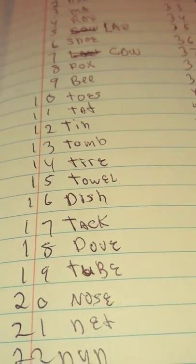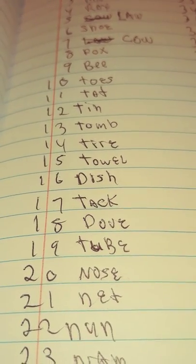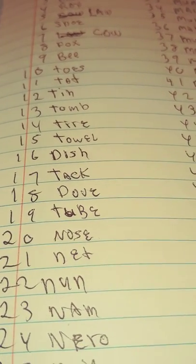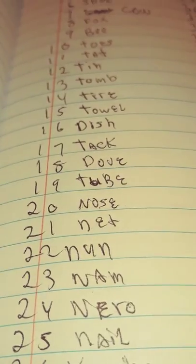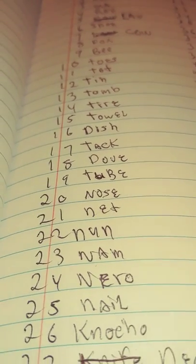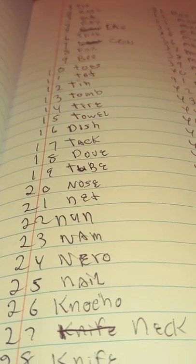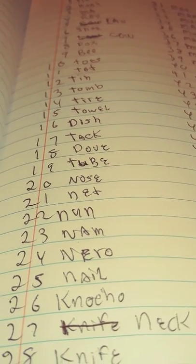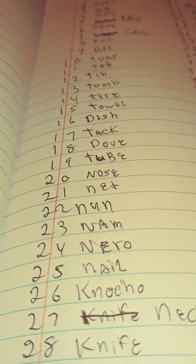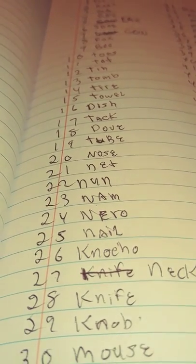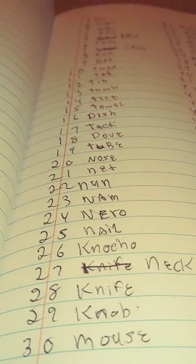We go to 21 is net, 22 is nun, 23 is Nam like Vietnam, 24 is Nero, 25 is nail, 26 is nacho. I think I made a mistake but I corrected myself. 27 is neck, 28 is knife, 29 is knob like doorknob, and 30 is mouse.